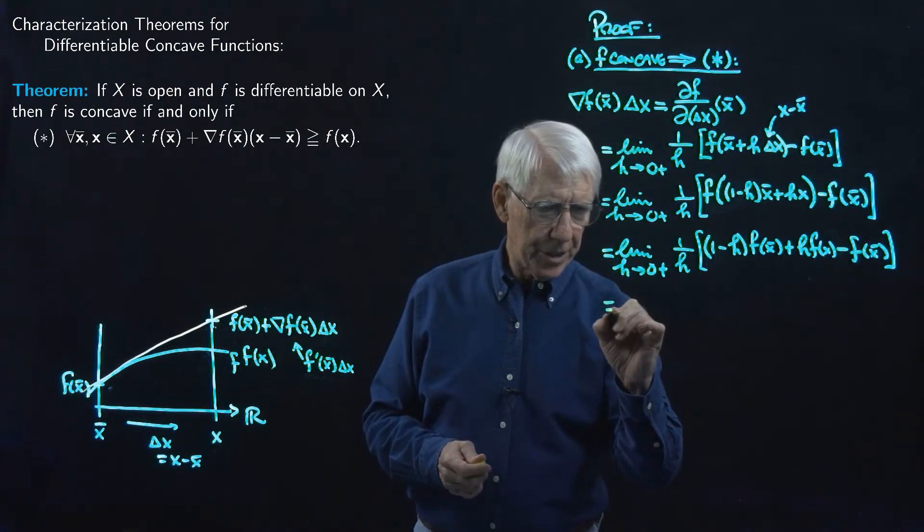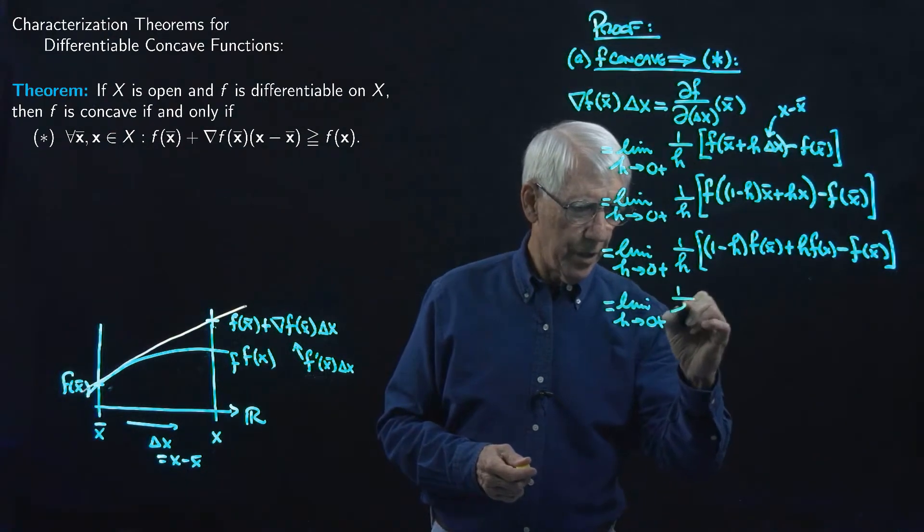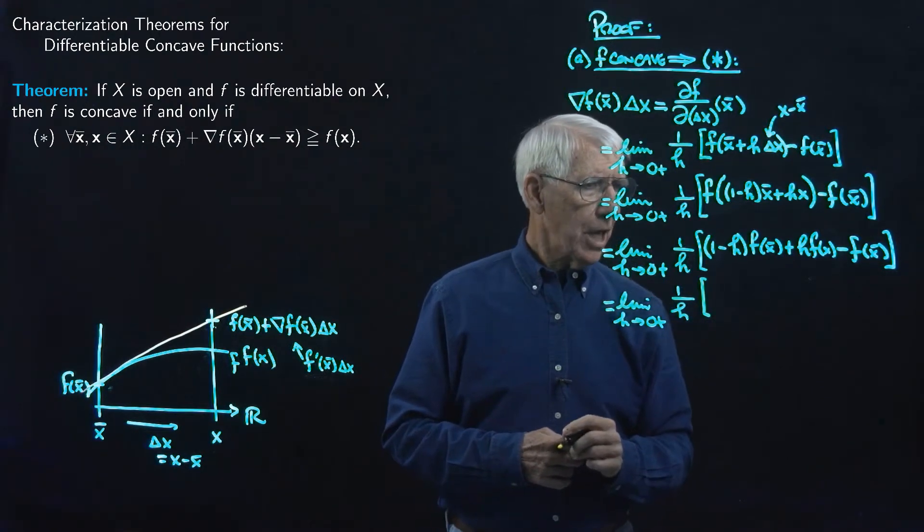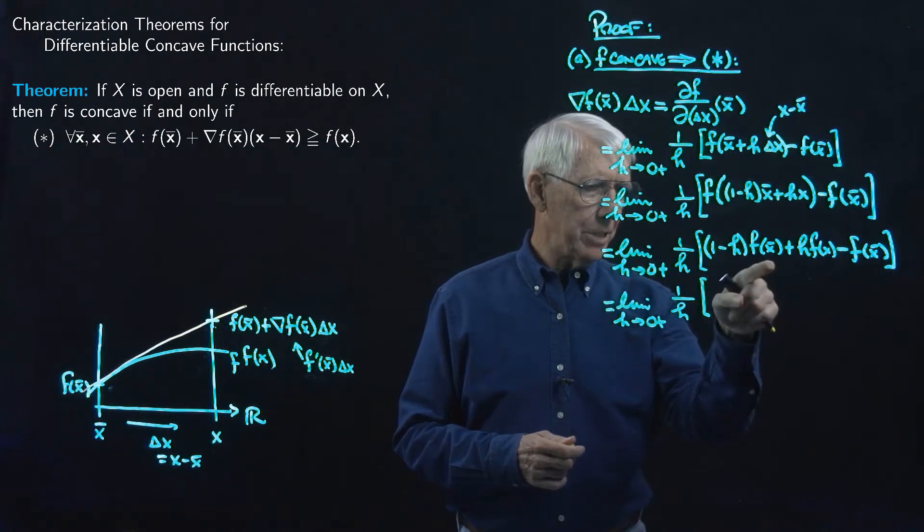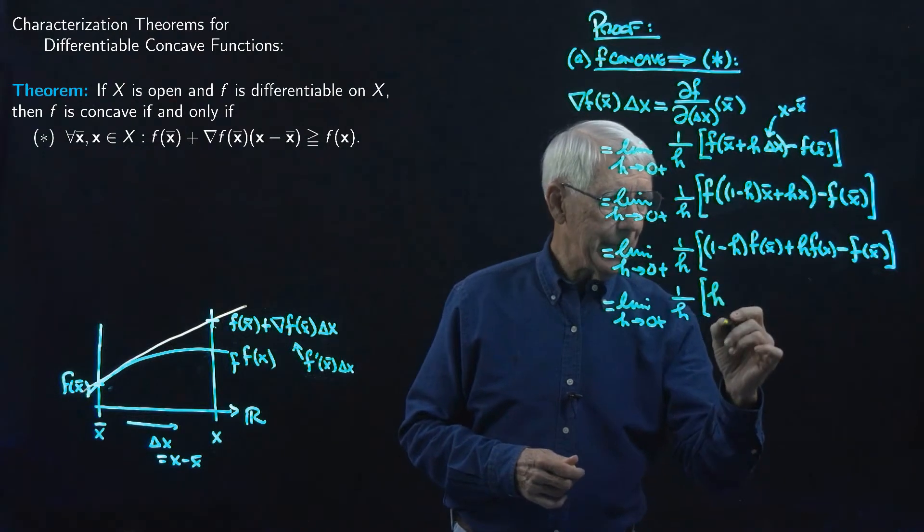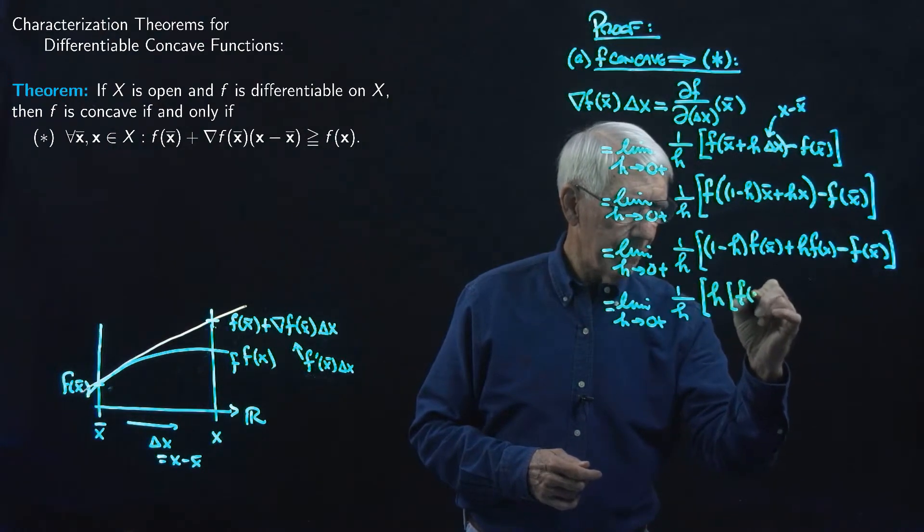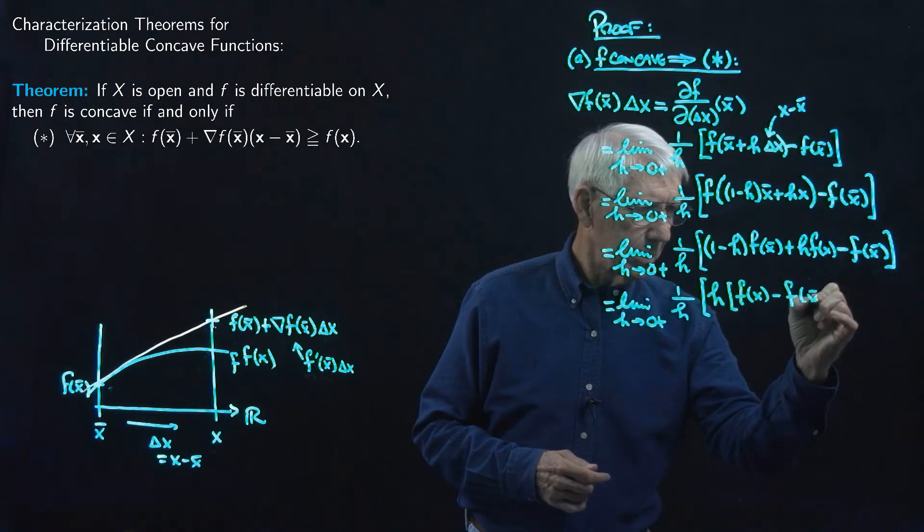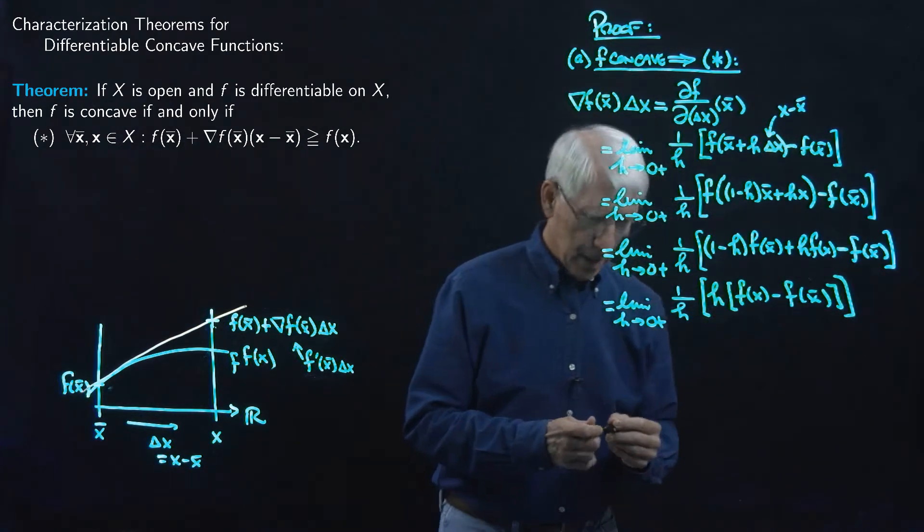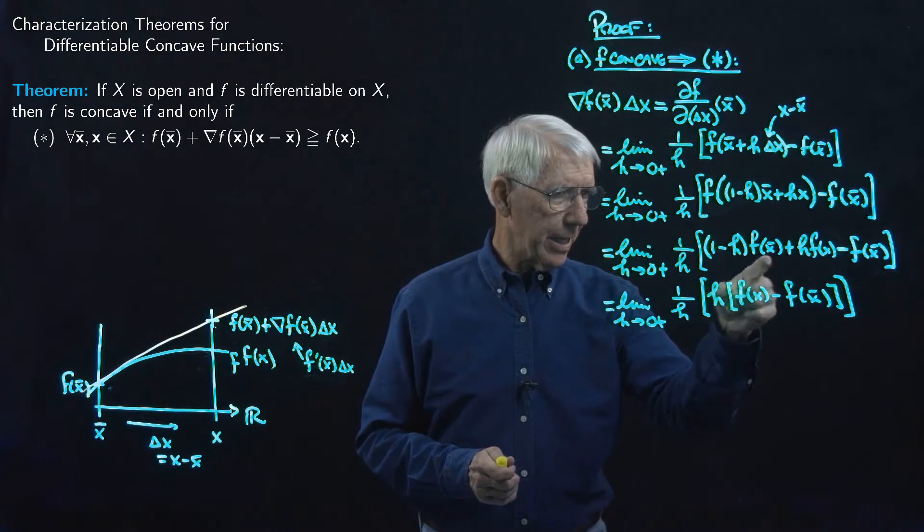And we can go another step further. This is the limit as H goes to zero from above of one over H times, now I have F of X-bar here, one times F of X-bar minus F of X-bar, so that drops out. So all I've got here now remaining is H, and I'll have to put another brackets here, H times F of X minus F of X-bar. Right, F of X-bar minus F of X-bar, so that dropped out, then I've got H times F of X minus H times F of X-bar.